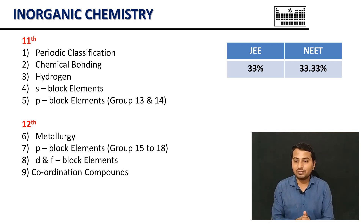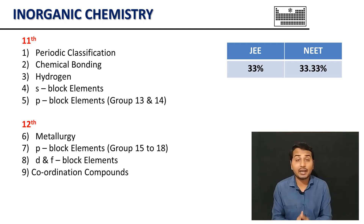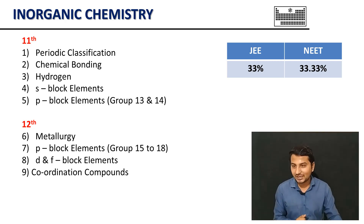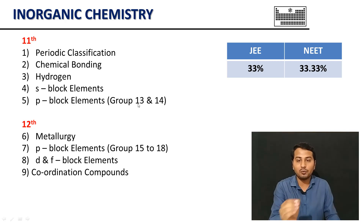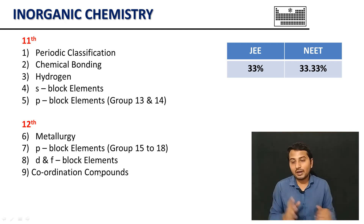Inorganic chemistry covers periodic classification and chemical bonding. Topics include hydrogen, S block elements, P block elements (Groups 13, 14, 15, 18), metallurgy, D and F block elements, and coordination compounds.